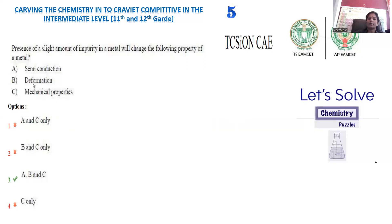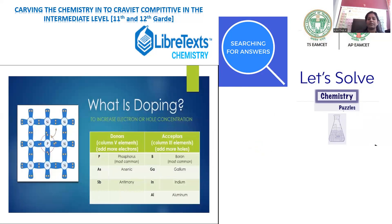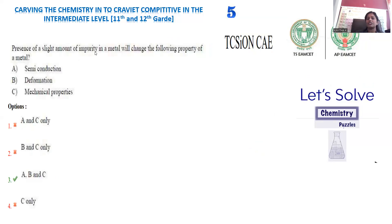Regarding deformation, take the example of gold. Gold in pure form is a soft metal that can be easily deformed. When added with the impurity of copper, its toughness increases and deformation is reduced. Another example is steel: iron blended with carbon has its toughness highly increased. That is the reason why deformation is directly linked with the addition of impurity.